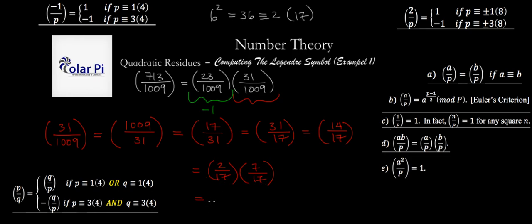So 7 over 17. And here, this is congruent to 3 mod 4. This is congruent to 1 mod 4. So we know that this is the same as 17 over 7. And then next, we reduce 17 mod 7. And we see that it's the same as 3 over 7, writing 17 over 7, the same as 3 over 7.